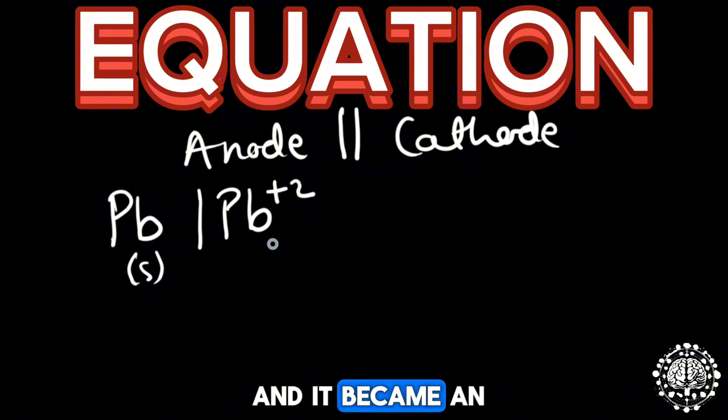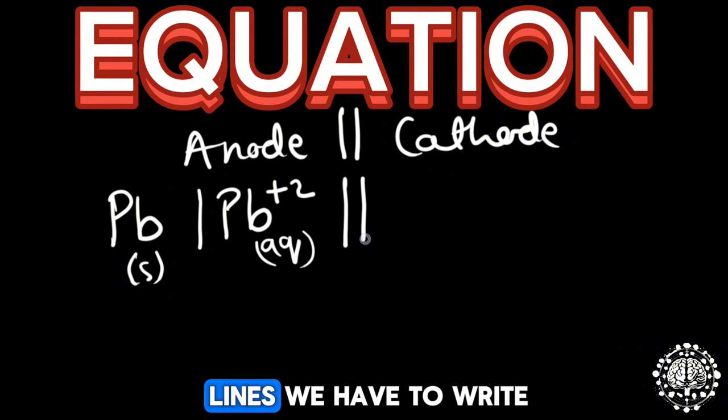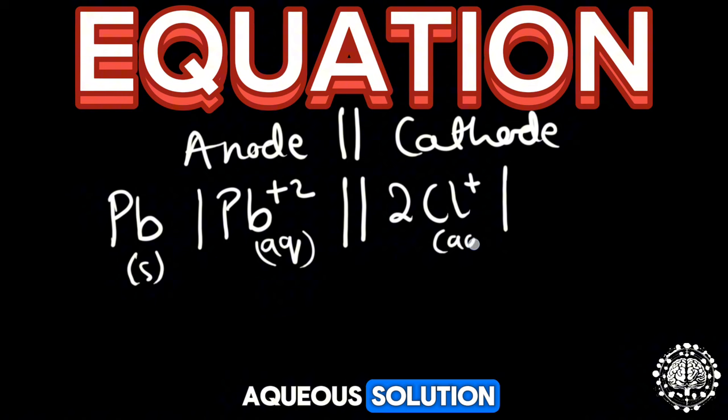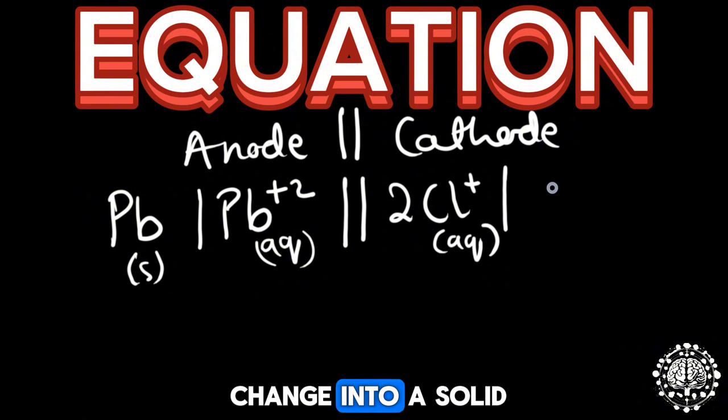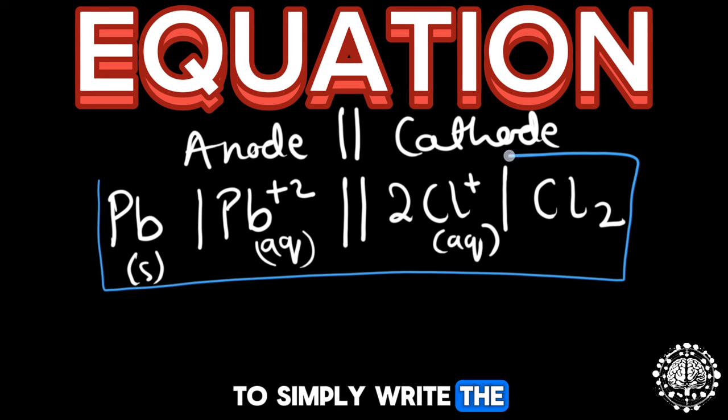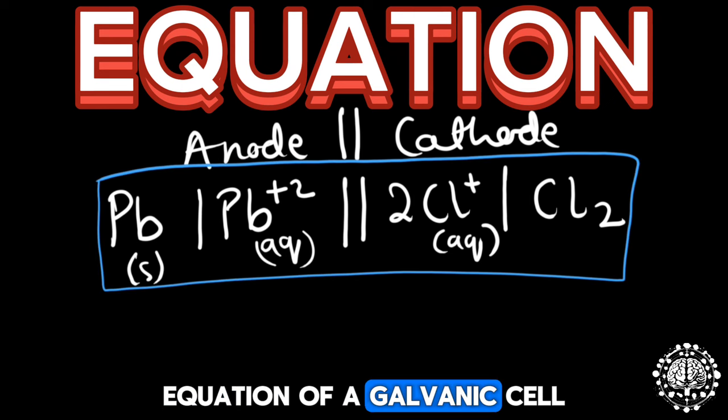We have to write, and then on the right side we had here two of chlorine as the aqueous solution and then it will change into a solid of Cl2. And that is how to simply write the equation of a galvanic cell.